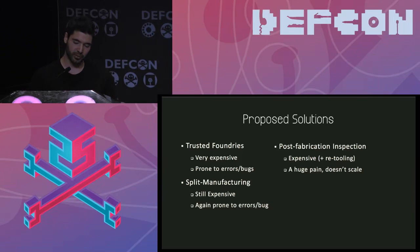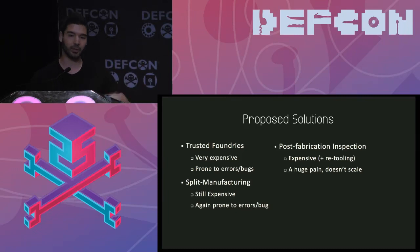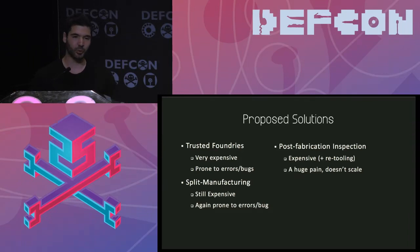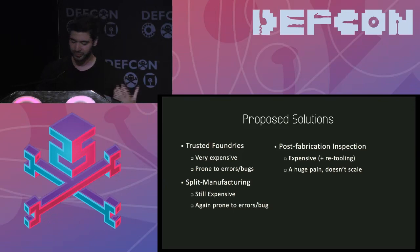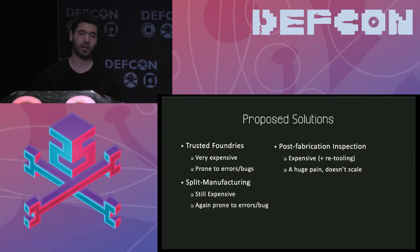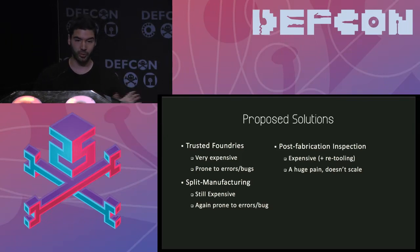The final approach is post-fabrication inspection: you order your IC, it's manufactured, you get it back and run tests on it. The problem is that it requires expensive tools, you need to constantly retool as techniques advance, and if you order thousands of chips, you cannot test all of them — so you can never be 100% sure nothing went wrong.